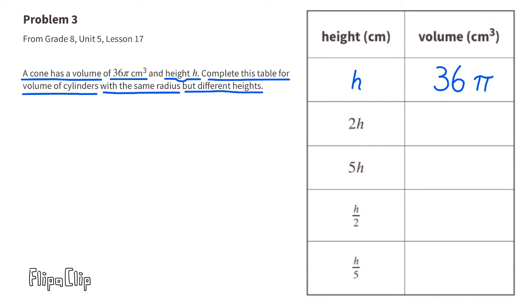When you double 1h you have 2h. Since you doubled the height, you double the volume. 36 times 2 times π is 72π.